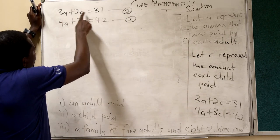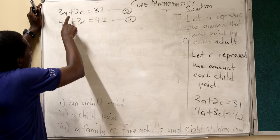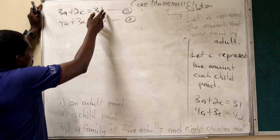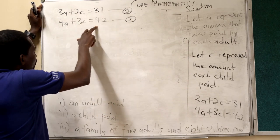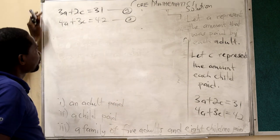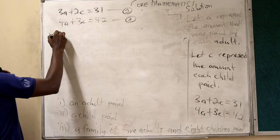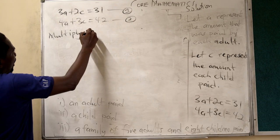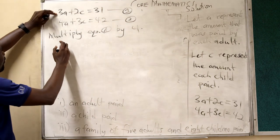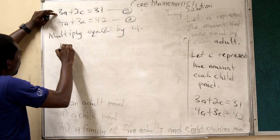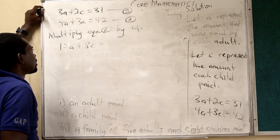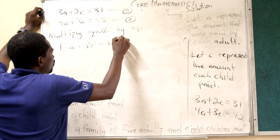Now, when I multiply equation 1 by 4, I will have 12A plus 8C and so on. Now, when I multiply equation 2 by 3, I will have 12A plus 9C and so on. Now, let me multiply equation 1 by 4. I am going to have 3A times 4 is equal to 12A and 2C times 4 is 8C. And 31 times 4 is 124.